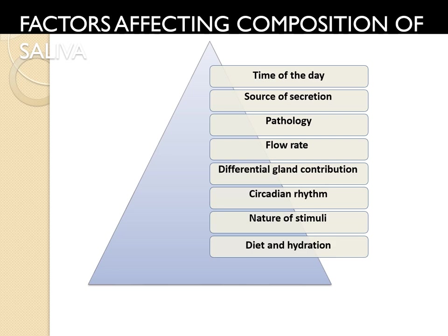Factors affecting the composition of saliva include: time of day, source of secretion, pathology present, flow rate, differential gland contribution, circadian rhythm, nature of stimuli, diet and nutrition. Of these, flow rate is the most important. At high flow rates, there is less time for reabsorption and secretion, so the saliva is most like the initial secretion by the acinar cells — thus the concentration of ions changes. At low flow rates, modified saliva contains low concentration of sodium and chloride, and high concentration of potassium and bicarbonate.